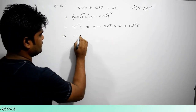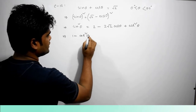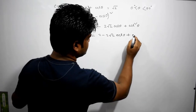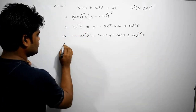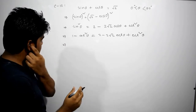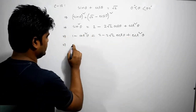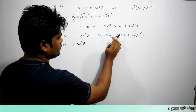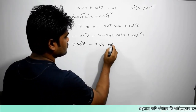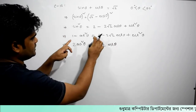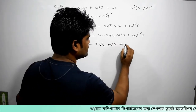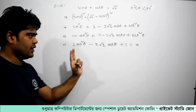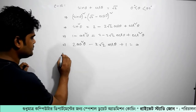1 minus cos²θ equals 2 minus 2√2 cosθ plus cos²θ. Simplifying: 1 minus 1 minus 1 minus 2√2 cosθ equals 1 minus 1 minus 1 plus 1 minus 1 plus 1 minus 1. Cos theta is not on i.e.